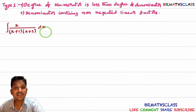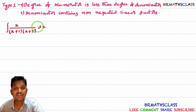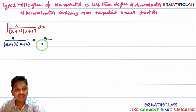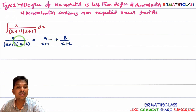Once you have identified the problem as Type 1, the next important point is knowing how to write the Type 1 rational function into partial fractions. This is a rational function because it is of the form f(x)/g(x). In Type 1, we write the rational function x divided by (x+1)(x+2) as A divided by (x+1) plus B divided by (x+2).